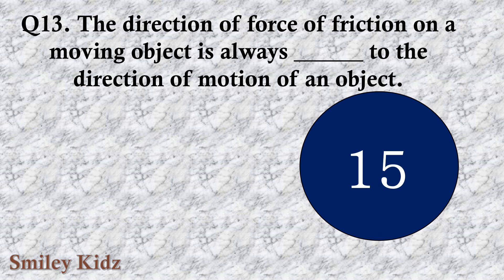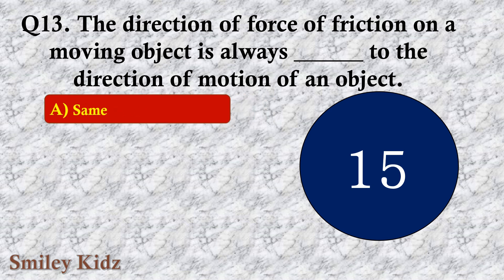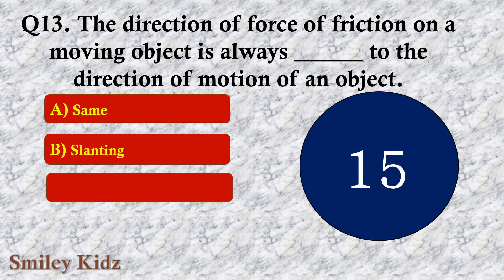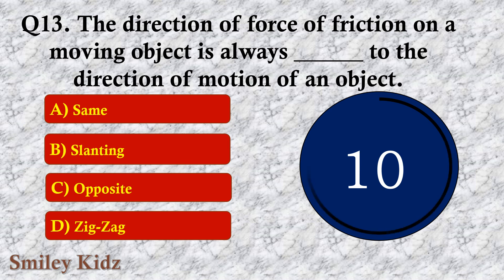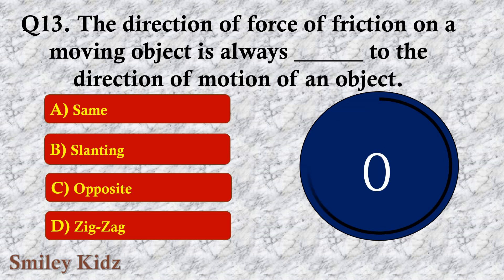Question number thirteen: The direction of friction on a moving object is always dash to the direction of motion of an object. The options are A. Same, B. Slanting, C. Opposite, or D. Zigzag. The right answer is option C — Opposite. The direction of friction on a moving object is always opposite to the direction of motion.